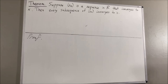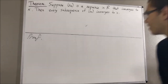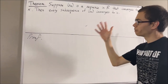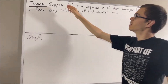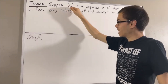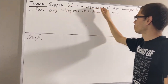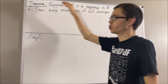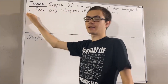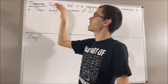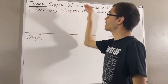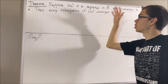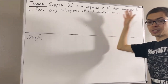In this video, we are going to prove the following theorem: suppose xn is a sequence of real numbers that converges to the value x. Then every subsequence of xn also converges to x.